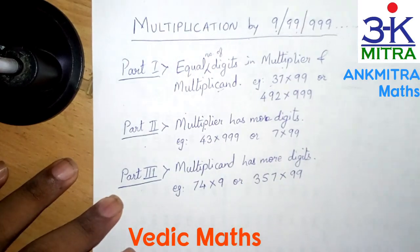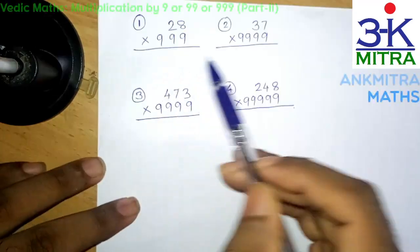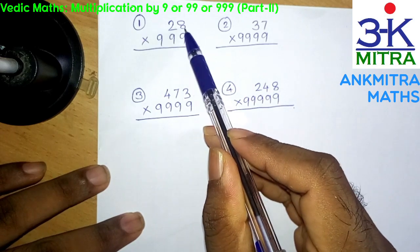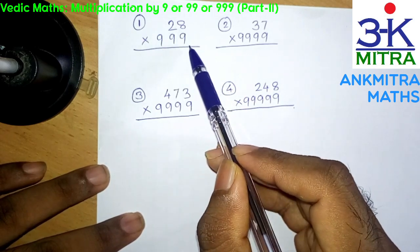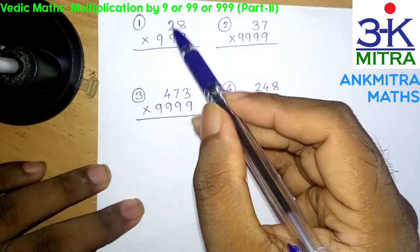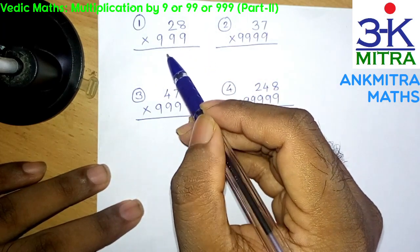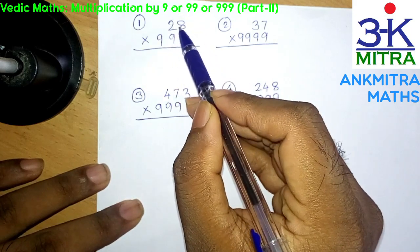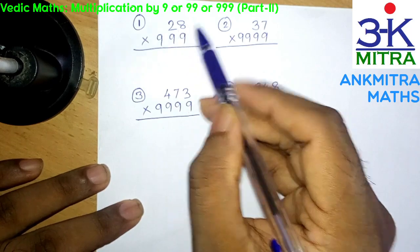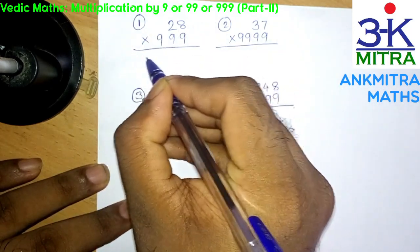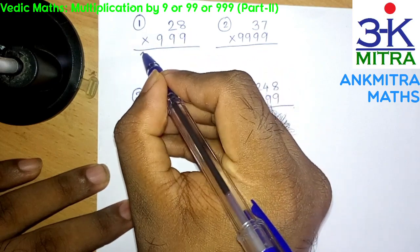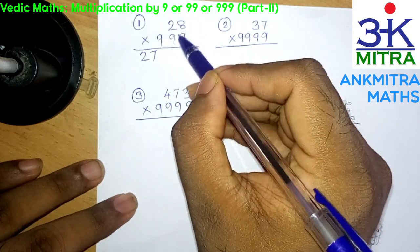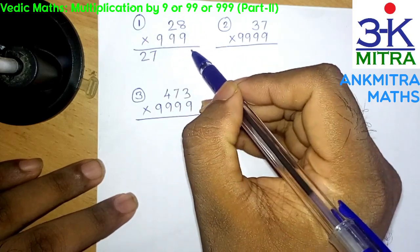So let's look at a few examples. I have written 4 examples on the paper. In the first example, we have a 2-digit number multiplied by triple 9, that is 999. The method to follow here is quite similar to the Part 1 method. What we do is we have the number 28 — we reduce 1 from 28 and write it down on the left side. So 28 minus 1 is 27, we write down 27 here.